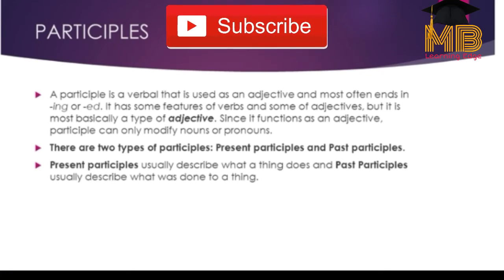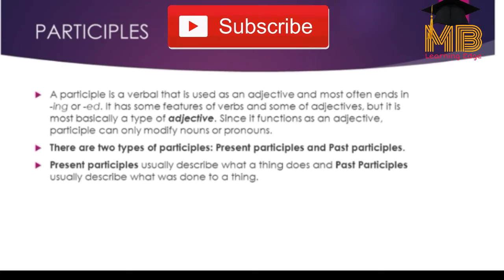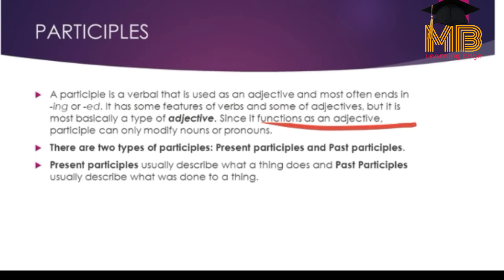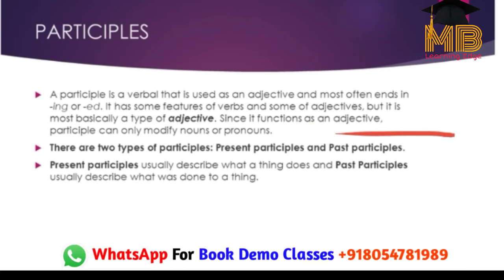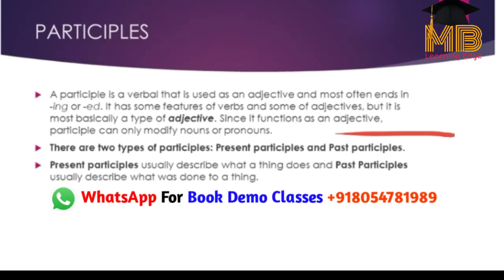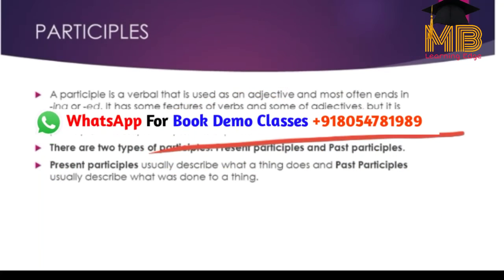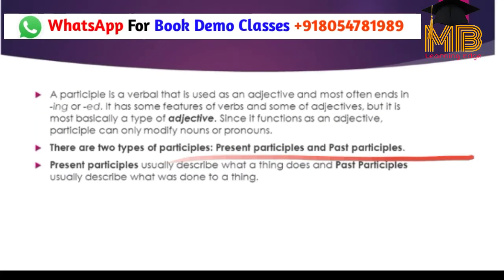Now we come to participles. A participle is a verbal that is used as an adjective, and often ends in -ing or -ed. It has some features of a verb and some of an adjective, but it is basically a type of adjective. Since it is an adjective, it can modify only nouns or pronouns, because adjectives essentially modify nouns or pronouns.